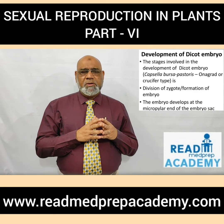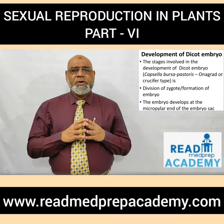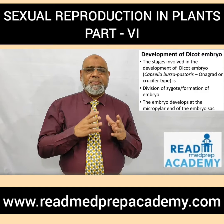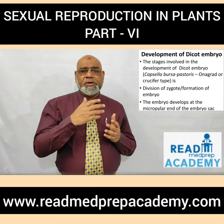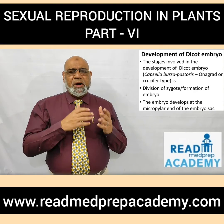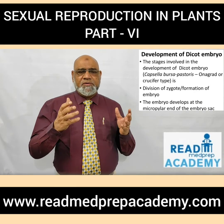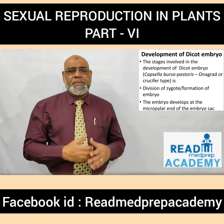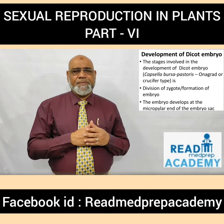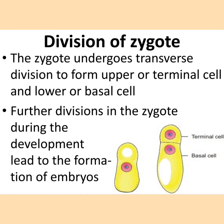Now let us talk about the development of the dicot embryo. The example is Capsella bursa-pastoris, commonly called shepherd's purse, and we will discuss the crucifer type. The embryo develops at the micropylar end of the embryo sac. The zygote undergoes a transverse division to form an upper terminal cell and a lower basal cell.